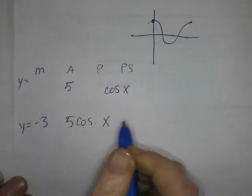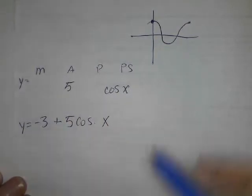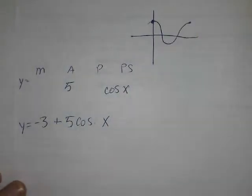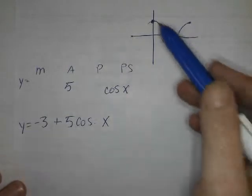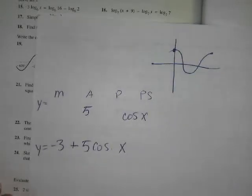So y equals negative 3 plus 5, because it hasn't been flipped upside down or anything. It would be minus if it had, like, reflected over the axis. Okay, so, oh, you can't see that and see the picture at the same time, huh?